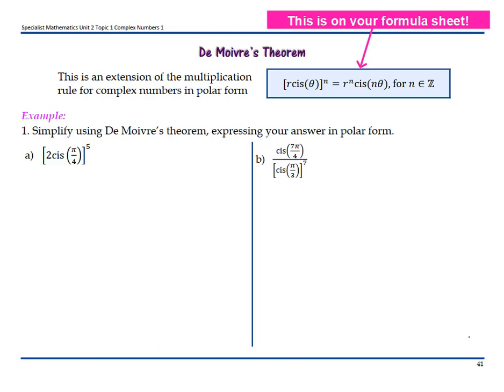This video shows how to use De Moivre's theorem for calculating powers of complex numbers. It's an extension of the multiplication rule for complex numbers in polar form, shown in the blue box here. So if I have r cis θ to the power of n, I can make that r to the power of n cis nθ. That formula is on your formula sheet as well. Let's look at some examples.